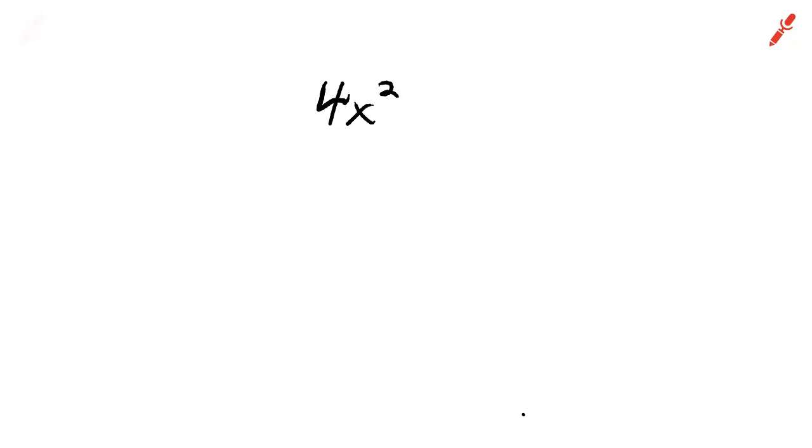Here's our first equation: 4x squared minus 52 equals zero. Add the 52 to both sides.